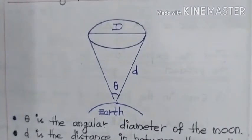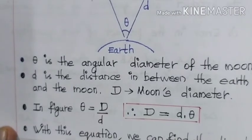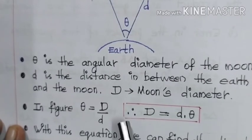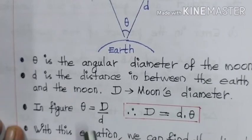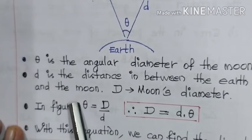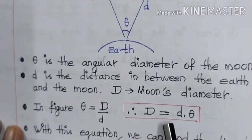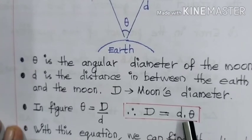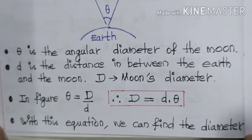From the figure, we can write the angle theta is equal to capital D divided by small d, which is the diameter of the moon divided by the distance between the moon and the earth. From this expression, we get capital D is equal to theta into small d. By using this expression, D equals d into theta, we can find the diameter of the moon.